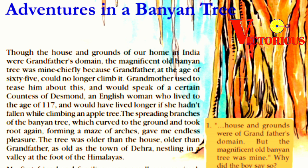Look at the first paragraph: Though the house and grounds of our home in India were grandfather's domain, the magnificent old banyan tree was mine — chiefly because grandfather, at the age of 65, could no longer climb it. Grandmother used to tease him about this and would speak of a certain Countess of Dismal, an English woman who lived to the age of 117 and would have lived longer if she hadn't fallen while climbing an apple tree. The spreading branches and roots forming a maze of arcs gave me endless pleasure. The tree was older than the house, older than grandfather, older than the town of Dehradun nestling in a valley at the foot of the Himalayas.